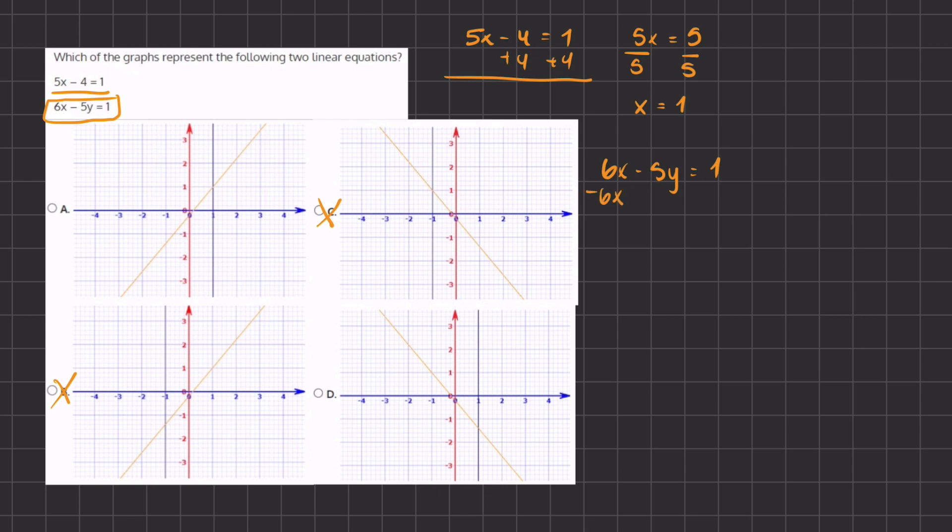We are going to subtract 6x from both sides, and we are left with negative 5y equals negative 6x plus 1. Now we're getting closer to our point slope form. All we have to do is divide by negative 5 on both sides, and we are left with y equals positive 6 divided by 5x minus 1 divided by 5.